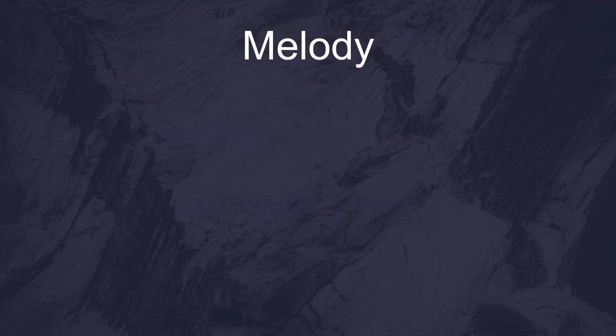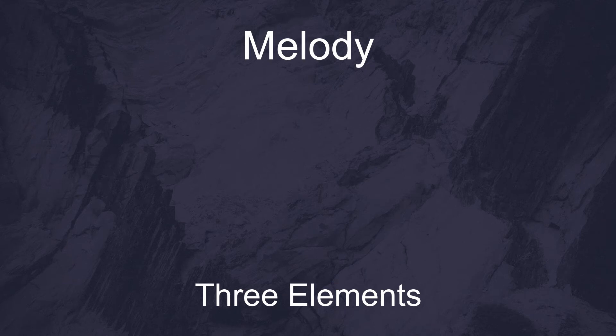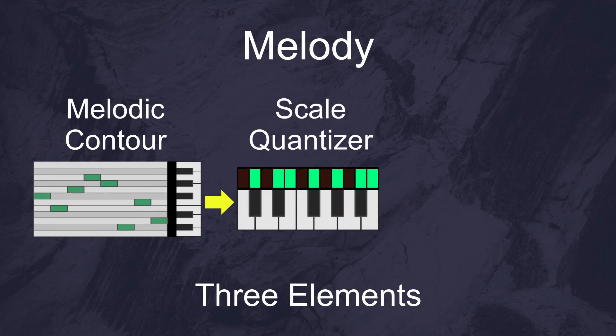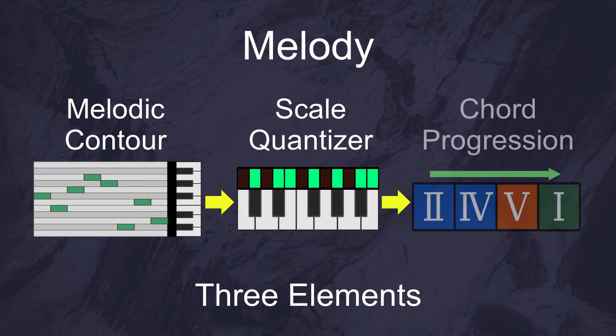So let's do that. The melody is made up of three elements that need to work together. These parts are the melodic contour, which sets the melodic direction, a scale quantizer to put everything into the same key, and a chord progression to shape the melodic path over time. Let's look at all of these individually.